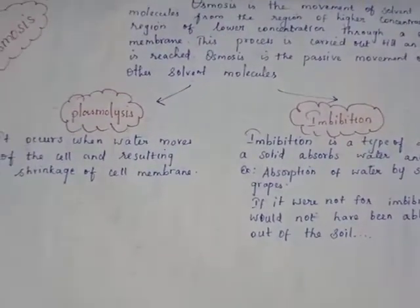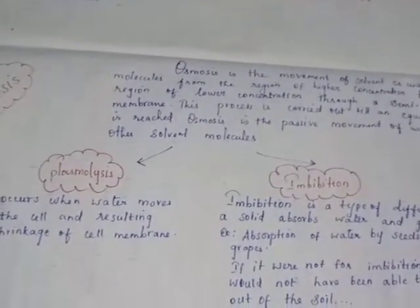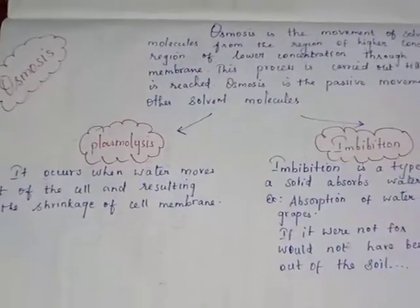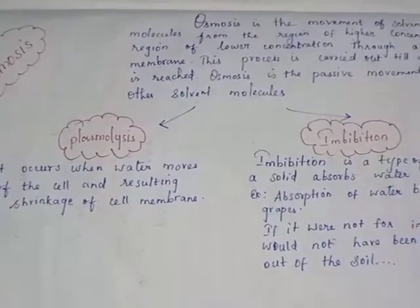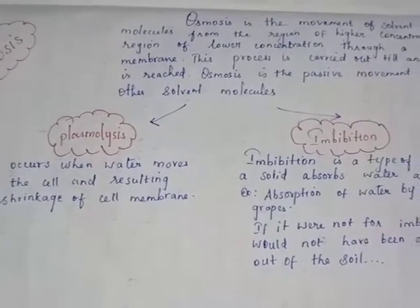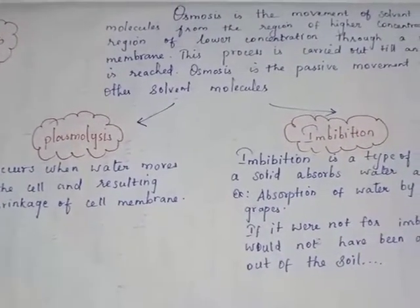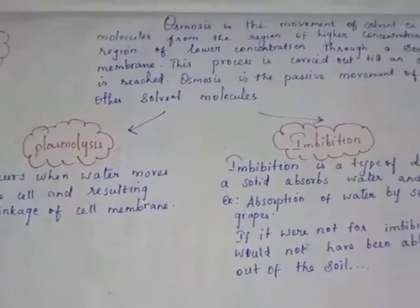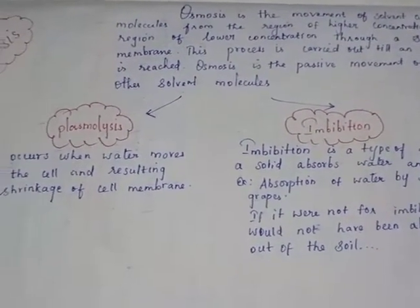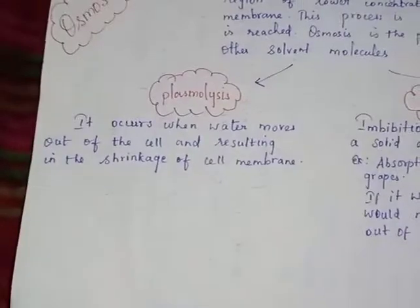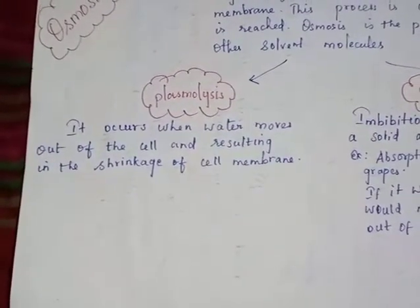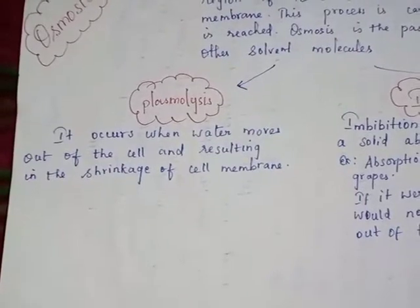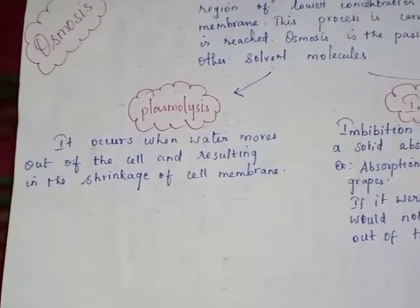Next, the types of osmosis. First, you know the definition of osmosis. The types of osmosis are: one is plasmolysis and another one is imbibition. Plasmolysis occurs when water moves out of the cell, resulting in the shrinkage of the cell membrane.